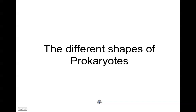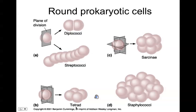Some microorganisms that are prokaryotic in cell structure are spherical or round when we look at them through the microscope. If we see a single round or spherical microorganism that's prokaryotic in cell structure, or even sometimes eukaryotic, we would use the word coccus — C-O-C-C-U-S — to describe a single one.